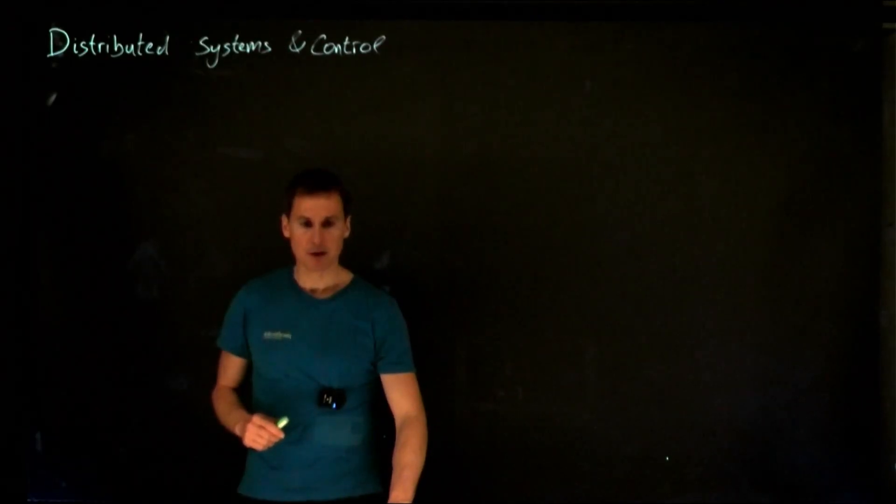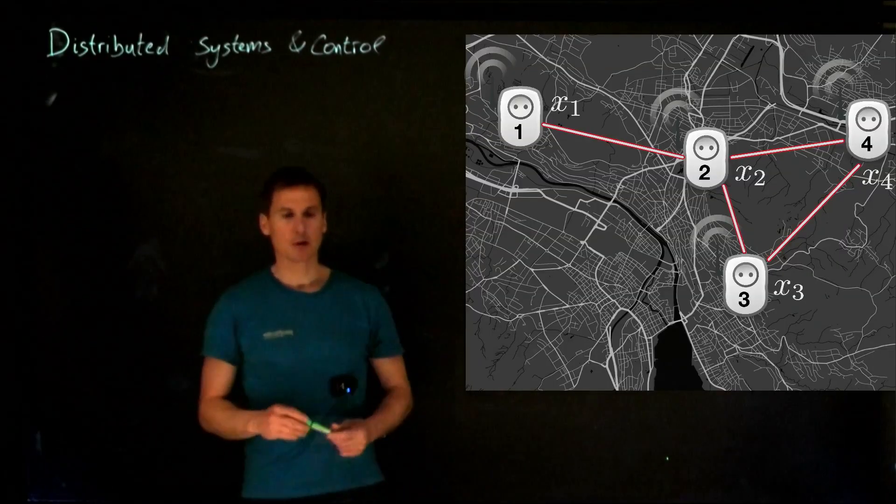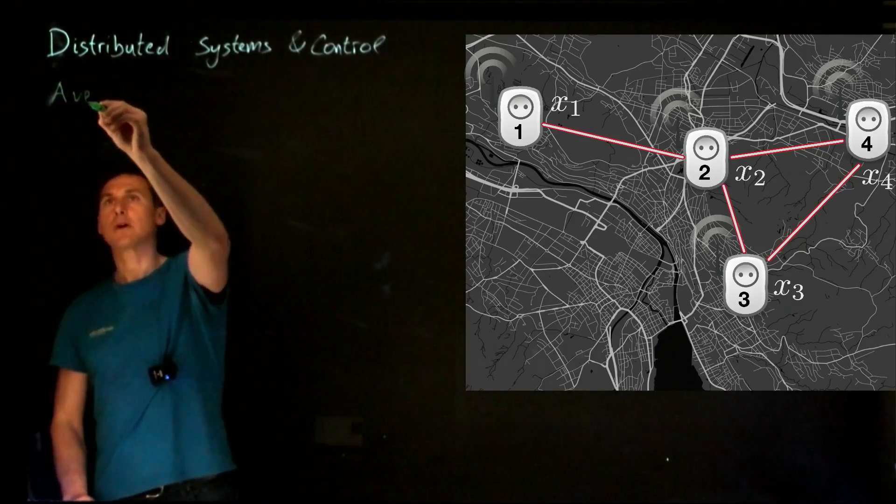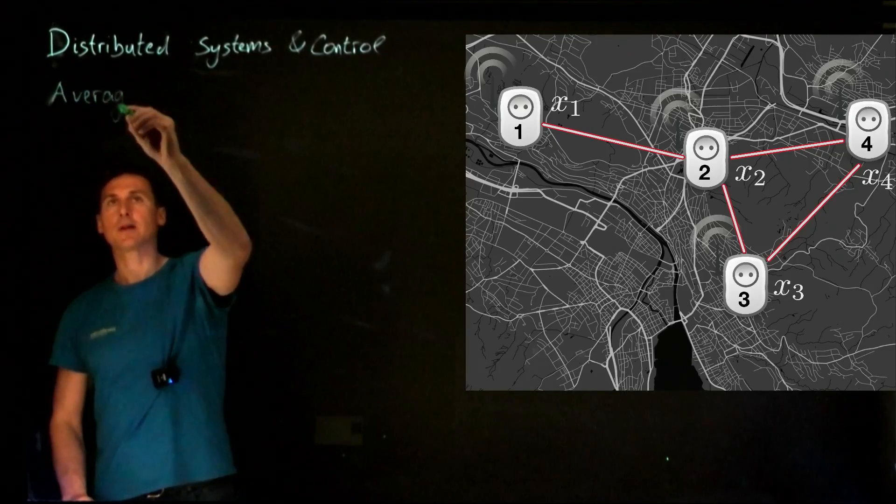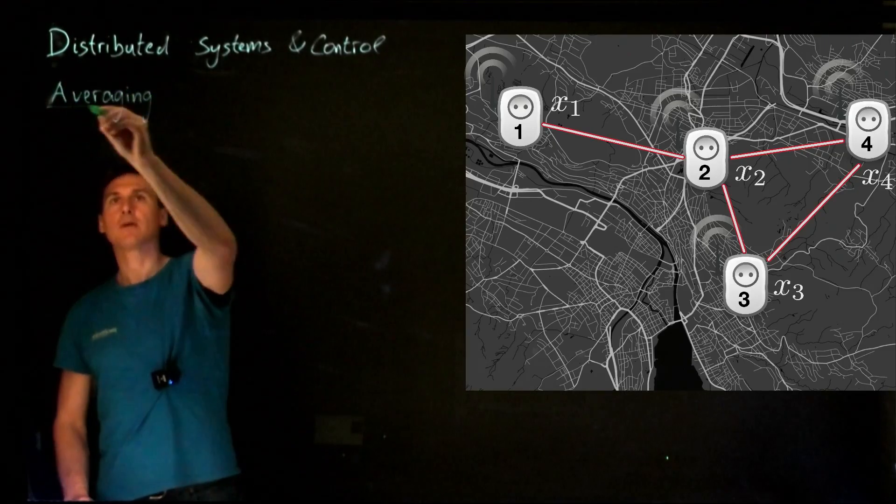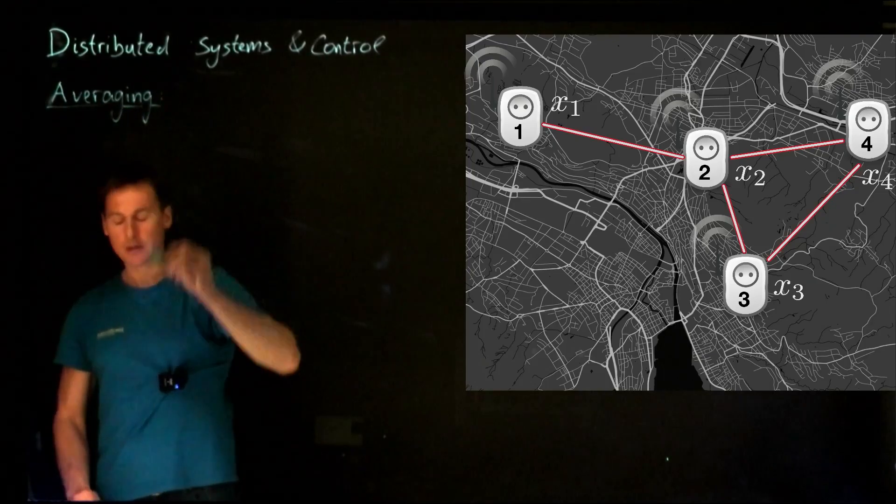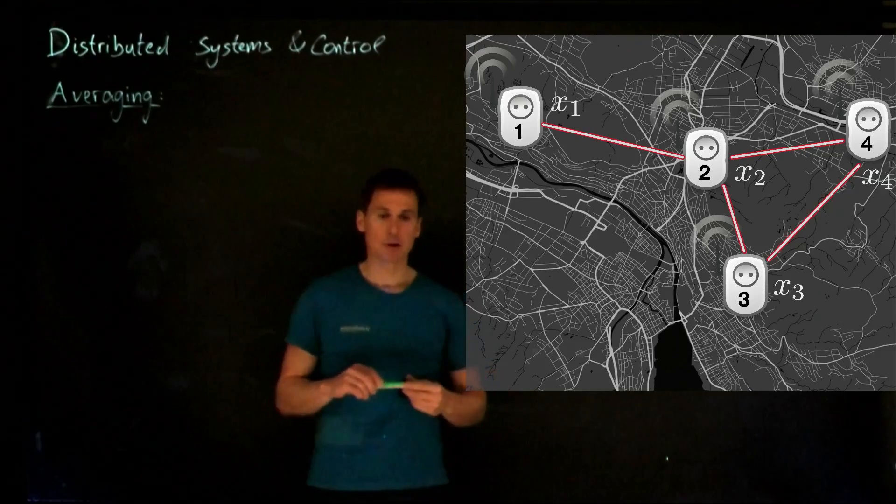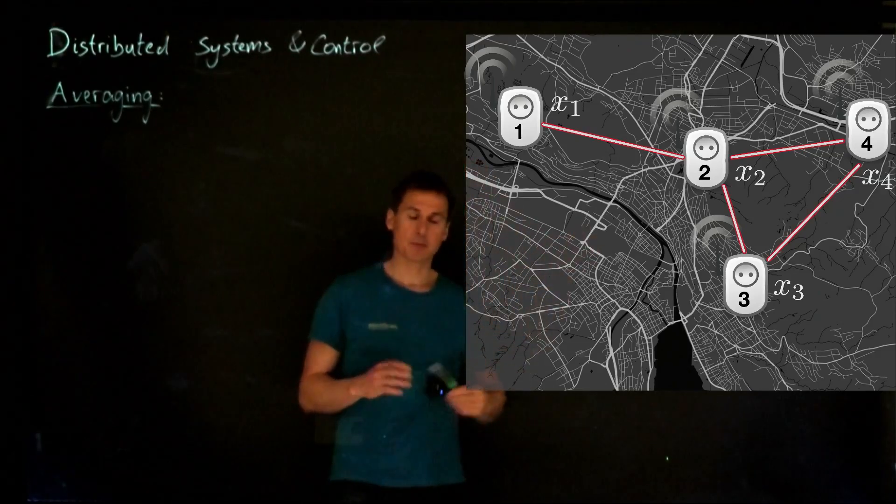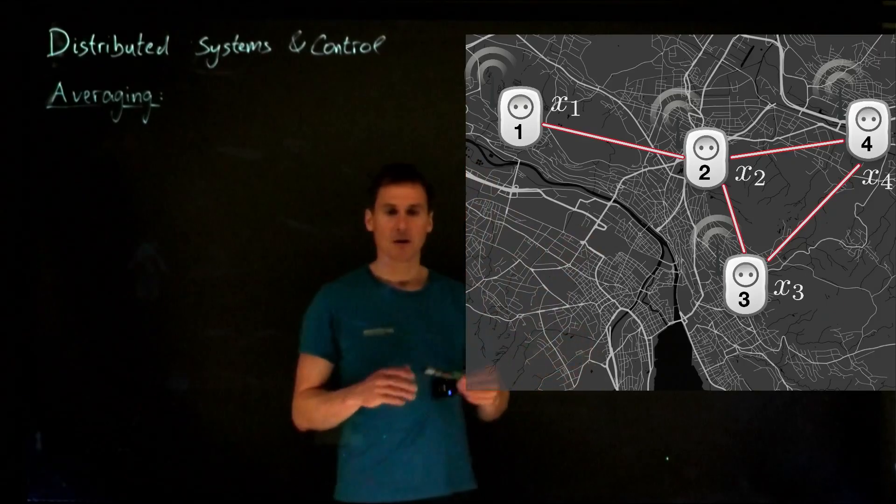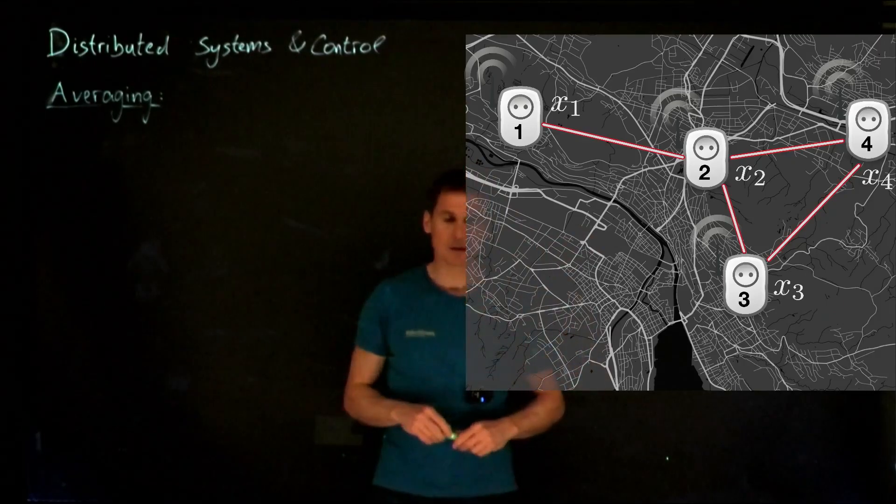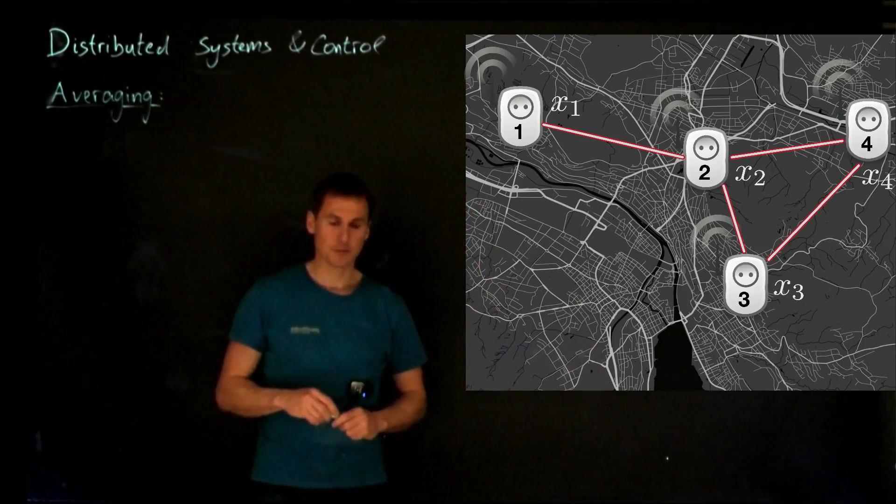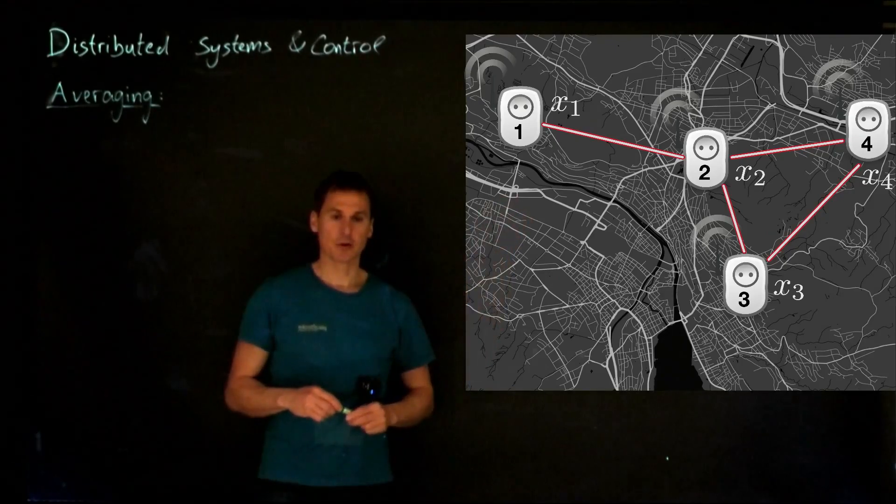Let me get started right away with an example. An example I want to look at is an averaging in a sensor network. So, as those of you that are from Zurich will probably see, on the right hand side we have a map of Zurich, a bunch of sensors, wireless sensors with some communication links in between them, that are placed over the city. For simplicity I just chose the different campuses of ETH Zurich throughout the city, but you can think about this of course being a much more dense and widely distributed network.